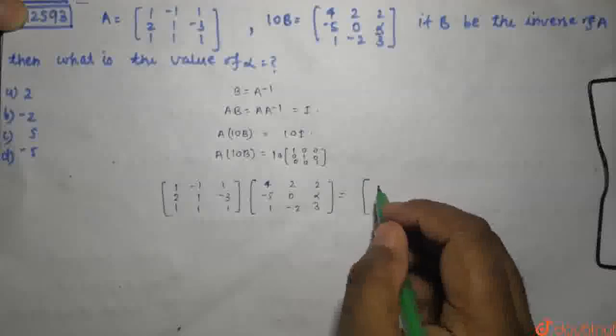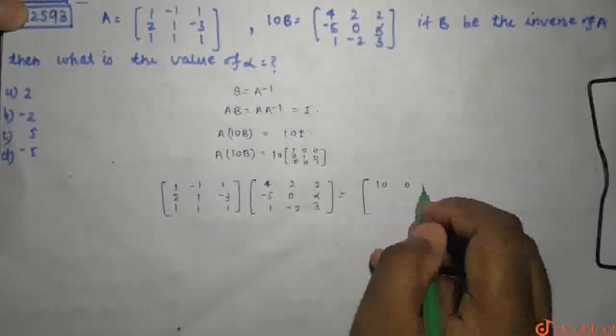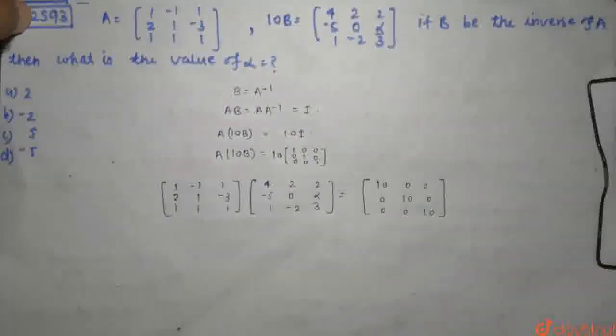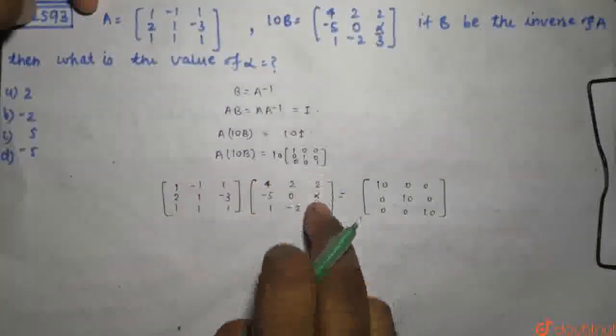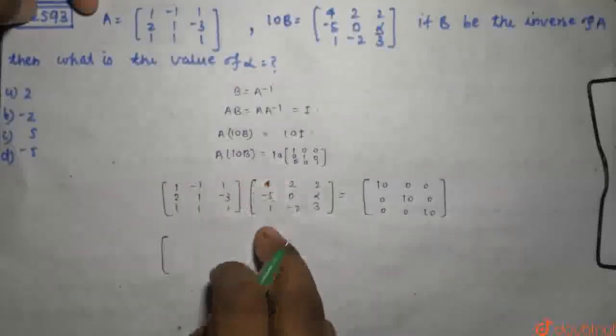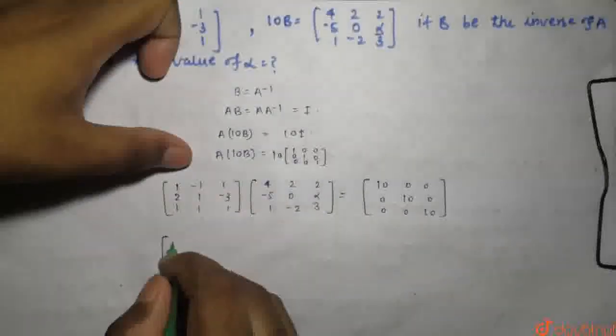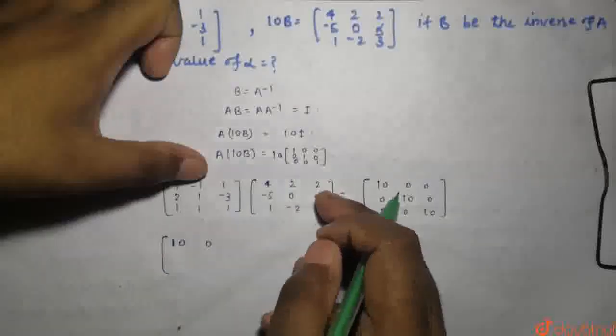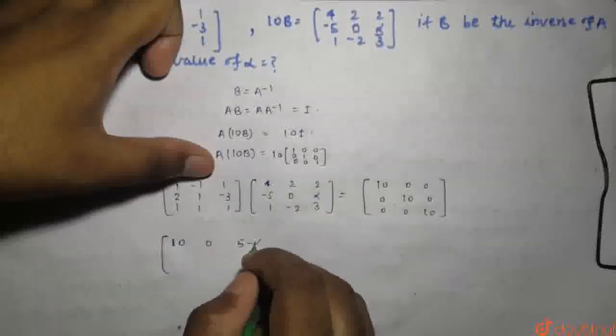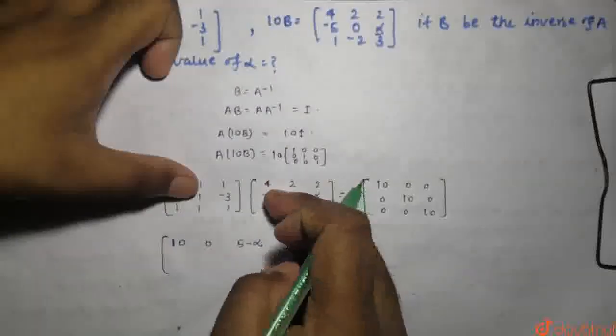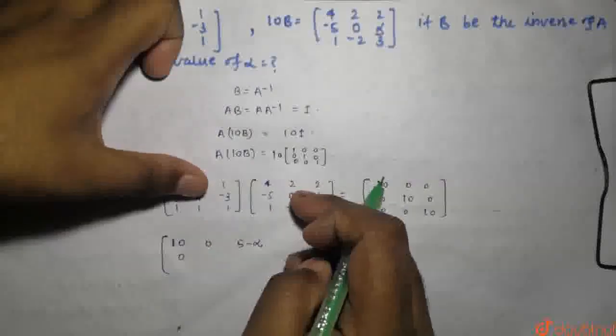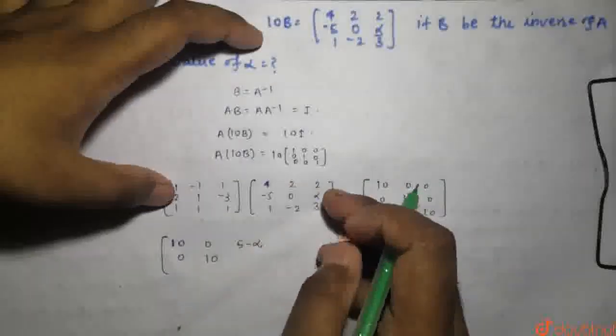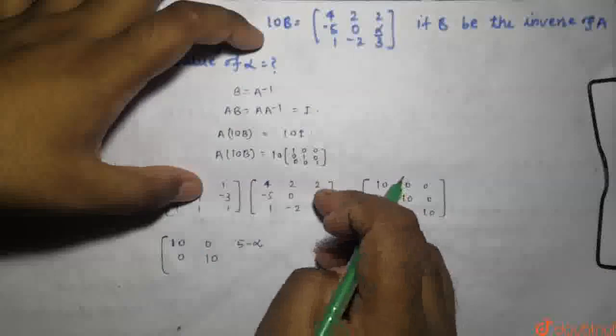Equals the identity matrix. The matrix product: first row first column is 4 plus 5 is 9 plus 1 is 10. Second element: 2 times 0 minus 2 is 0, plus 2 minus alpha plus 3 gives 5 minus alpha. Third element: 8 minus 5 minus 3 is 0. Next: 4 plus 0 is 4, plus 6 is 10. And 4 plus alpha minus 9.